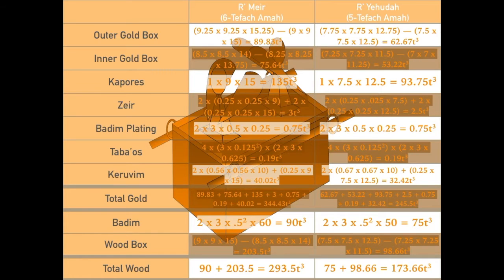In my calculations, I don't take into account the contents of the Aron, nor do I take into account that, according to Rabbi Yehuda, there is a shelf on the outside of the Aron. I also don't take into account that some of my calculations leave certain pieces of gold counted twice and others not counted at all, but my numbers are so rough, it doesn't really make that big of a difference.